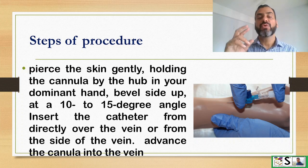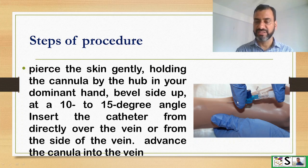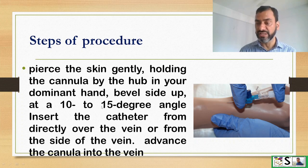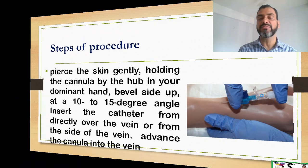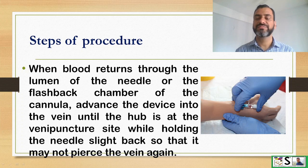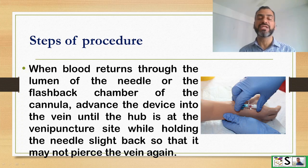Pierce the skin gently, holding the cannula by the hub in your dominant hand, at a 10 to 15 degree angle, and insert the catheter directly over the vein or from the side. Advance the cannula into the vein until blood is seen at the hub — this means the cannula is in the vein. When blood returns through the lumen of the needle or in the flashback chamber, the venipuncture is successful.